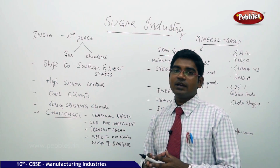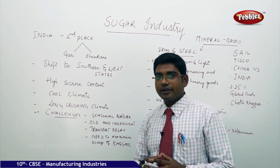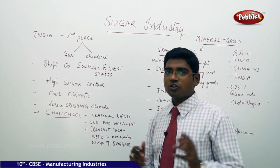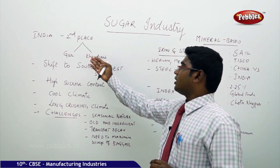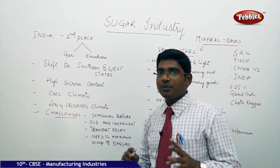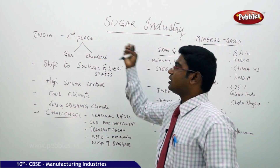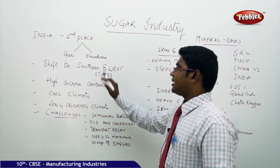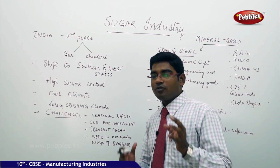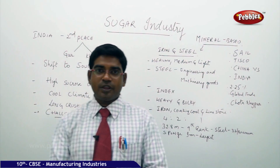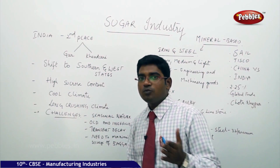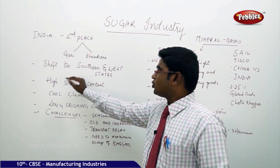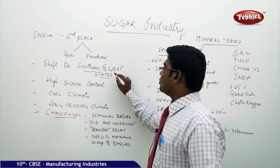Cuba is a very small country located in the northern American continent. Now, moving on to understand at which places India is having the production of sugar — Gur and Kansari are the two famous regions where we have sugar production on a very large scale in the northern belt. But the sugarcane industry has started to shift towards other regions, especially towards the southern and western states.